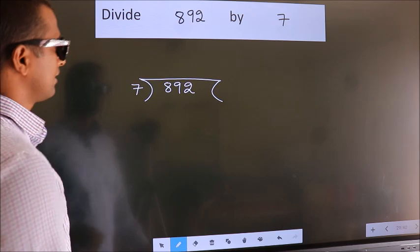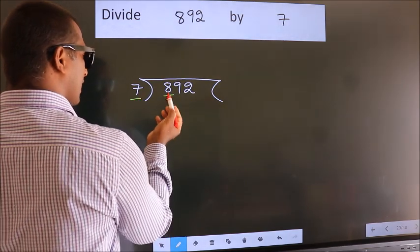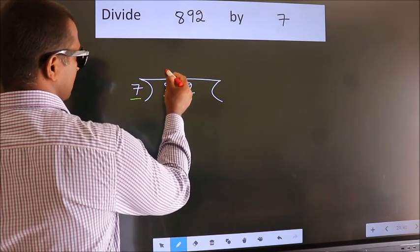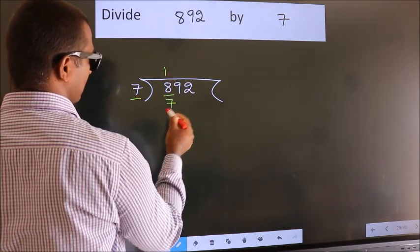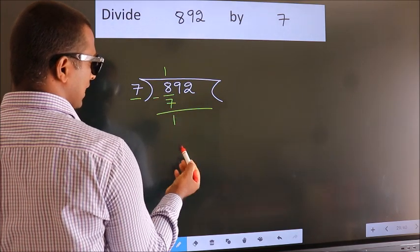Next. Here we have 8, here 7. A number close to 8 in 7 table is 7 once 7. Now we should subtract. We get 1.